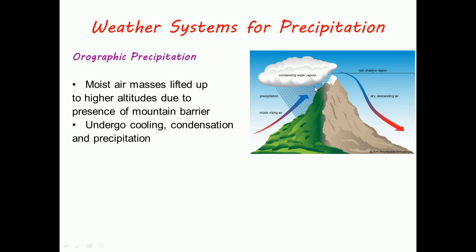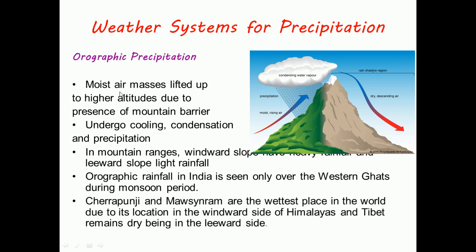This portion of the mountain is called windward side and this portion is called leeward side. In mountain ranges, the windward slope receives heavy rainfall and the leeward side receives light rainfall because the air is dry and descending.